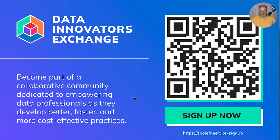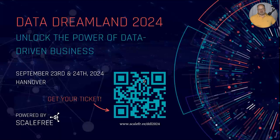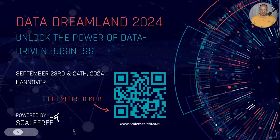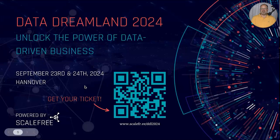Data Dream is coming up on September 23rd — less than 30 days away, actually 23 days. Our next conference is coming up and there are seats available. Check out the link: scalefree.ee/ddl2024 or use the discount code to sign up. It's a real conference in Hanover where we can shake hands. Enjoy your weekends and hopefully see you next Friday — thank you, guys!